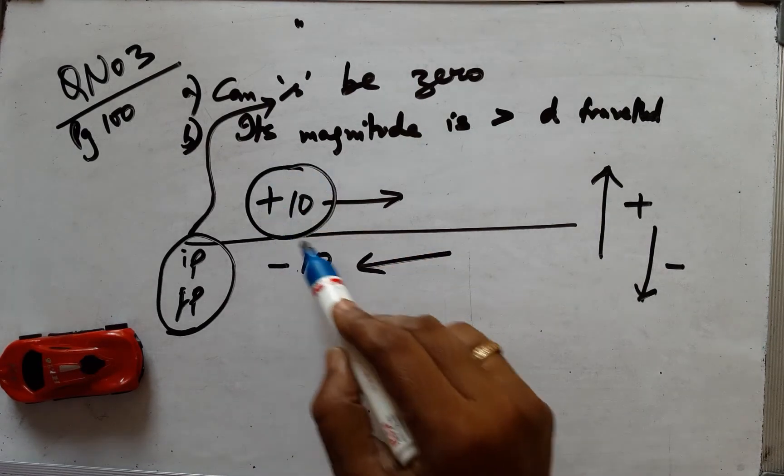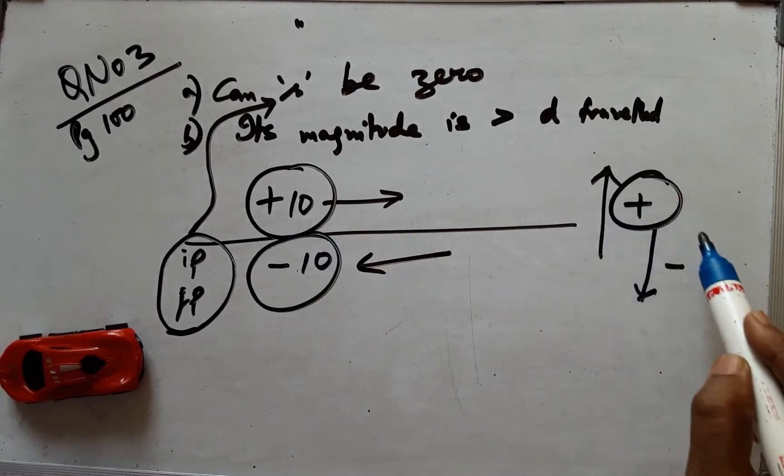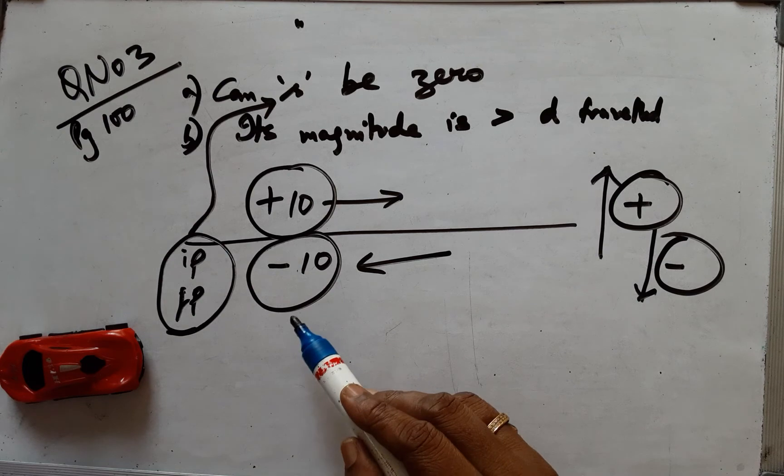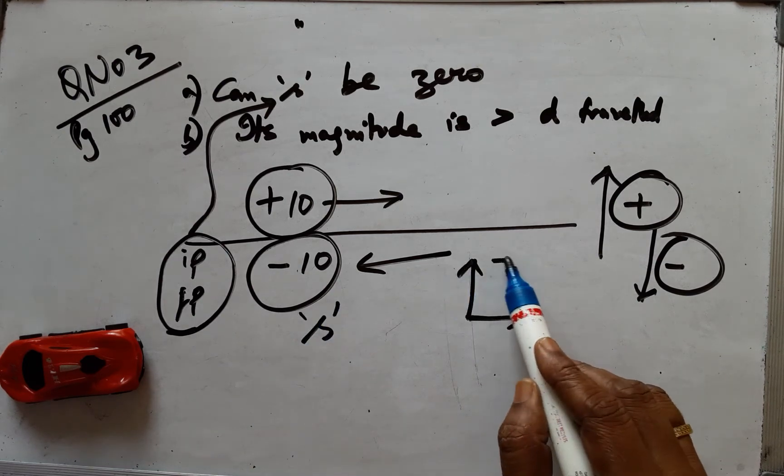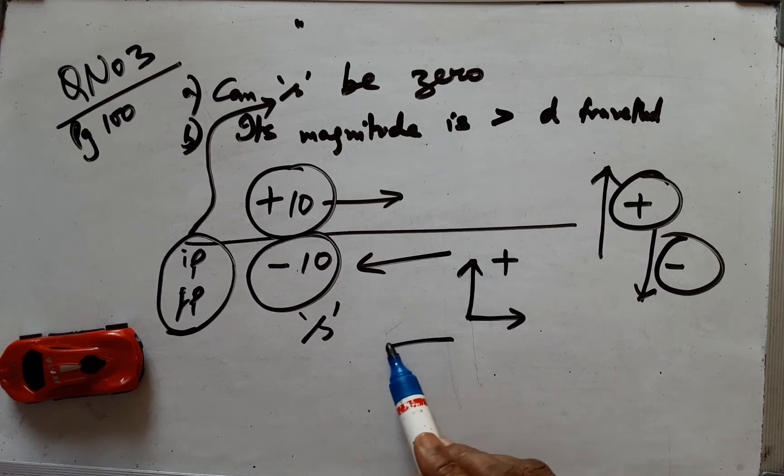This is a very important point and we have to observe the sign convention for displacement which says that up and right is plus, left and down is minus.